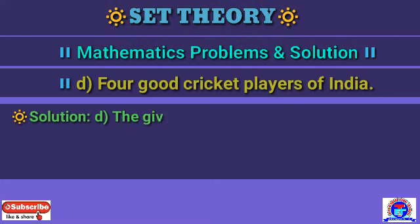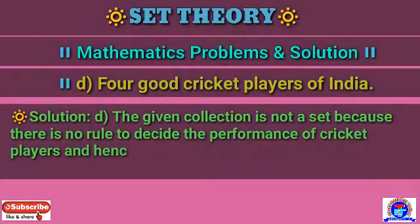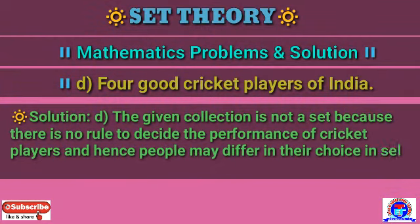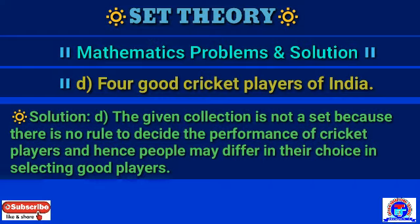Number D — the four good cricket players of India: the given collection is not a set because there is no rule to decide the performance of cricket players, and hence people may differ in their choice in selecting good players. Hope this example helped you to better understand what a set is.